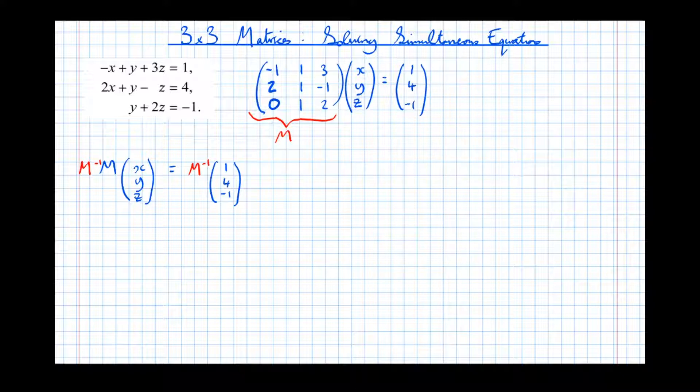So I'm going to multiply to the left there, or pre-multiply as it's sometimes known, by M to the minus 1. But because I've done it that side, I've got to pre-multiply that side as well. It's important that if you multiply to the left on the left-hand side, you multiply to the left on the right-hand side as well. Matrix multiplication isn't commutative.